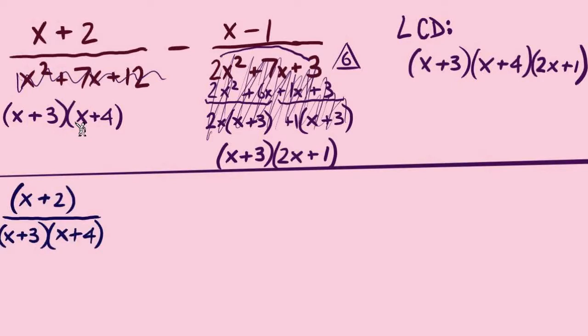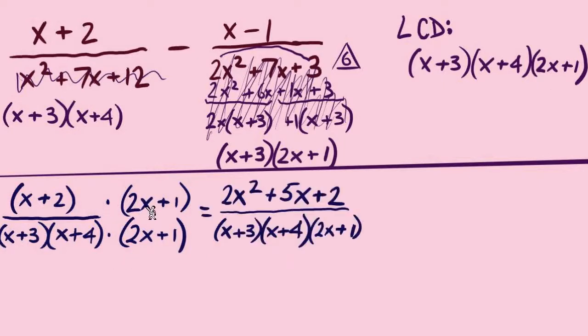Next, multiply the missing factors to the denominator and same factor to the numerator. So from this first denominator, we were missing the factor 2x plus 1. Multiply that to the numerator. We will need to FOIL that out. Keep it factored in the denominator, but FOIL method in the numerator gives us 2x squared plus 1x plus 4x is the outer and inner. Makes the 5x and then 2 times 1, 2.